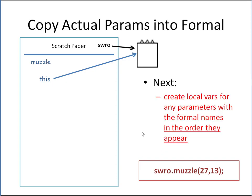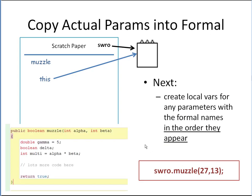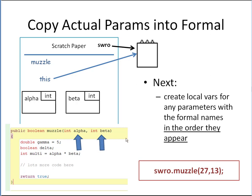The next thing we need to do is look at our method and see if it has any parameters. Let's look at the code — we need to look at the formal parameters here, the names. We have alpha and beta, so we're going to create local variables for any parameters with the formal names in the order they appear — that's very important. Alpha comes first, we create alpha on the left; beta comes next, we create beta to the right of that.